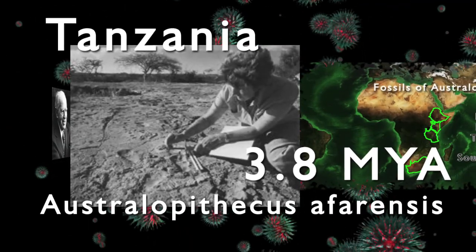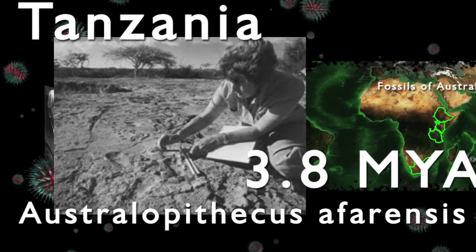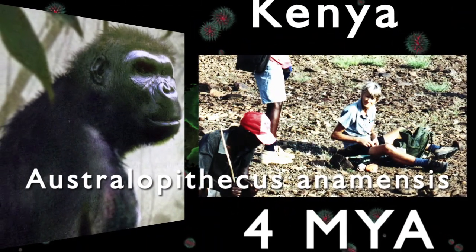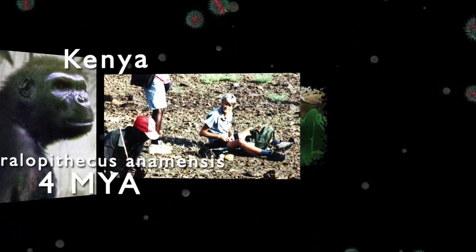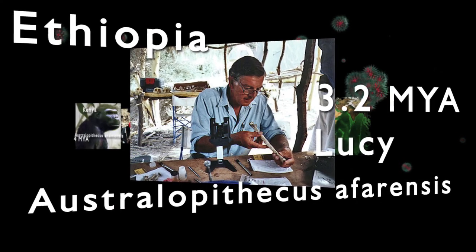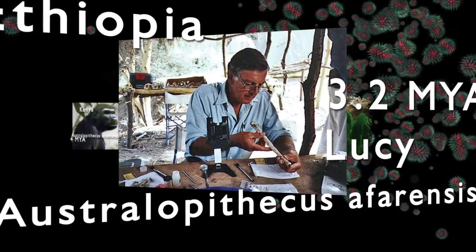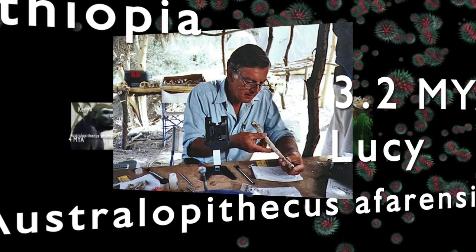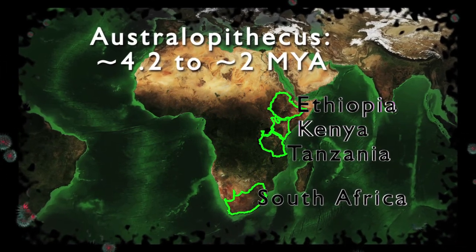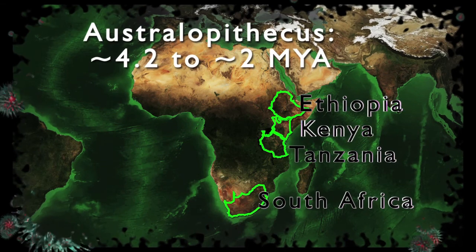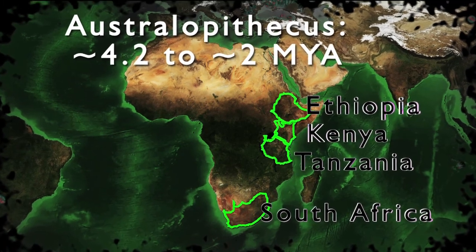In 1974, Mary Leakey discovered fossils of Australopithecus afarensis in Tanzania, which dated to 3.8 million years in the past. In 1997, Maeve Leakey discovered fossils of Australopithecus anamensis in Kenya at Kanapoi, which dated to around 4 million years in the past. In 1974, Donald Johansson discovered fossils of Australopithecus afarensis in Ethiopia dated to around 3.2 million years in the past. Johansson christened his fossil find Lucy after the Beatles song "Lucy in the Sky with Diamonds." The genus Australopithecus covers a time span from around 4.2 million years in the past forward to around 2 million years in the past. The Australopithecines ranged all across eastern Africa from present-day Ethiopia to South Africa.